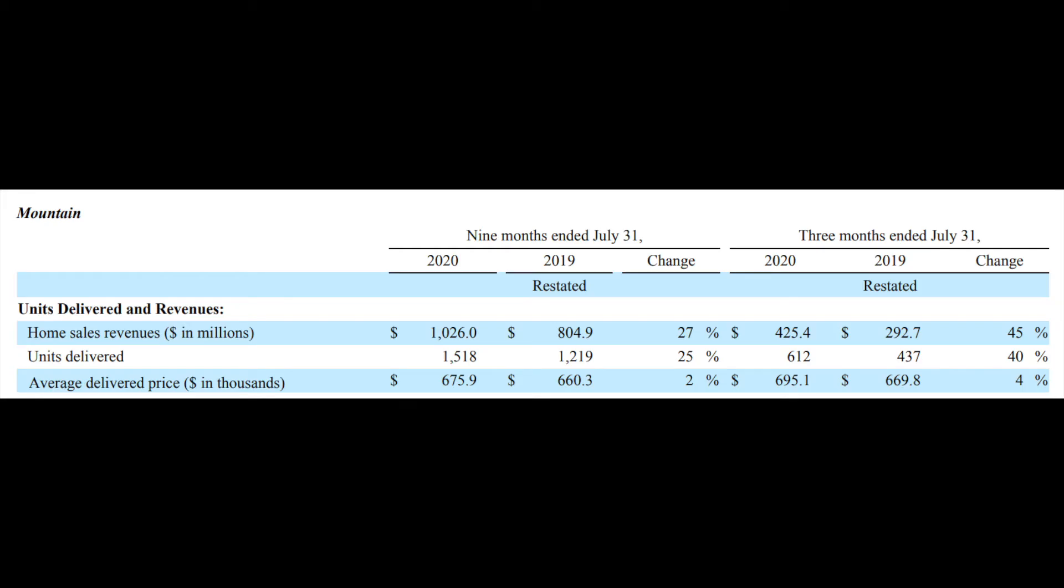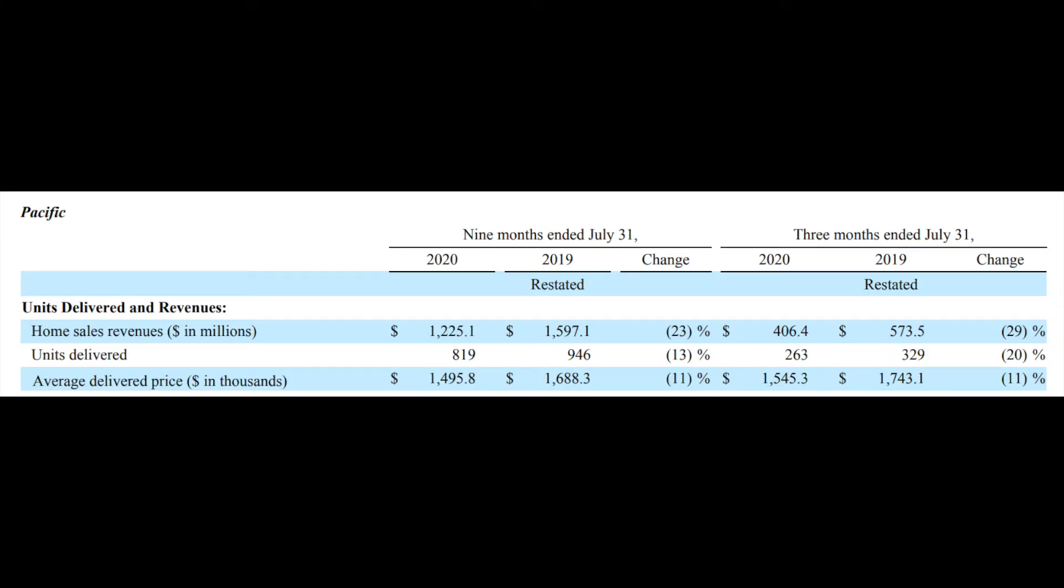Second to last market, mountain market. $292.7 million in revenue in 2019 compared to $425.4 million in 2020 for a 45% gain. 437 units delivered in 2019 compared to 612 units year over year for a 40% growth. Very strong numbers there. Very, very strong numbers there. I'm loving what I'm seeing with that. And an average home price of $669,000 in 2019 compared to $695,000 this past quarter for a 4% gain.